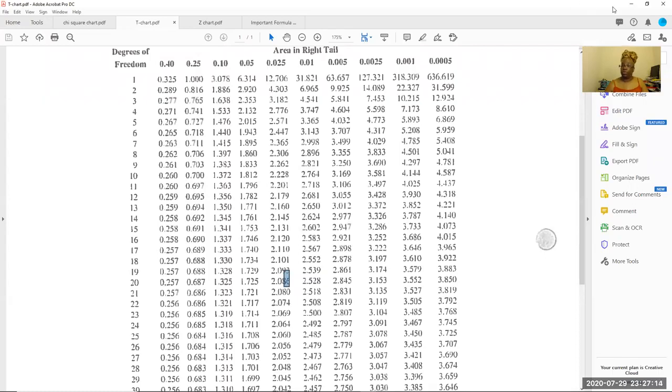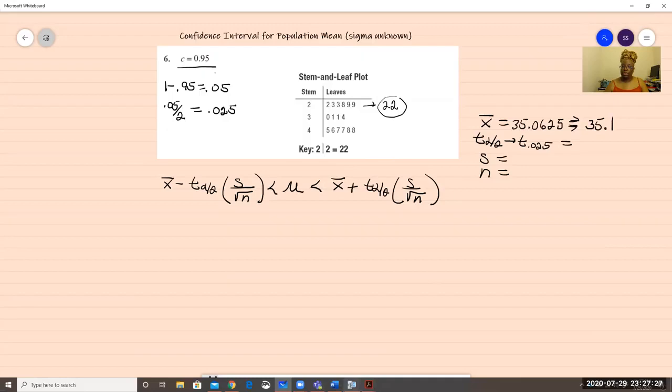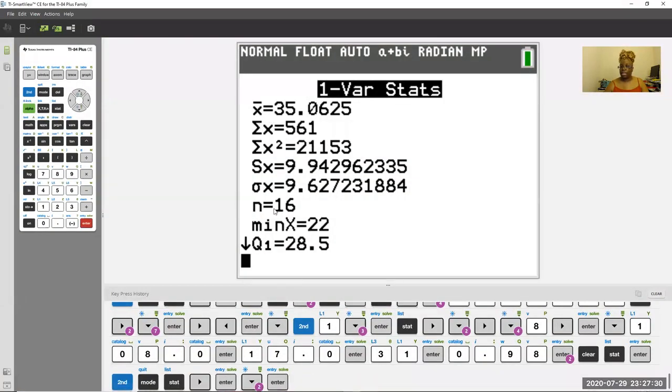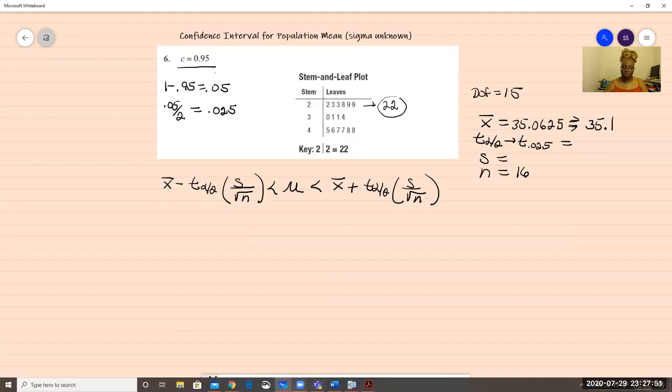We should know that the degrees of freedom is n minus one. So in our case, I don't know how many of these, but the good thing is that you put them in your calculator and you can see right here that your n is equal to 16. So your n is equal to 16, which we're going to write here because we may need that later. We do need that later. So your n is equal to 16, but your degrees of freedom is going to be equal to 15.